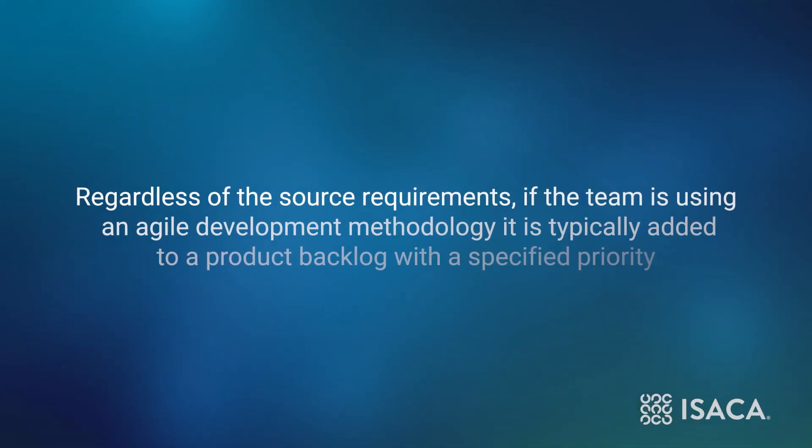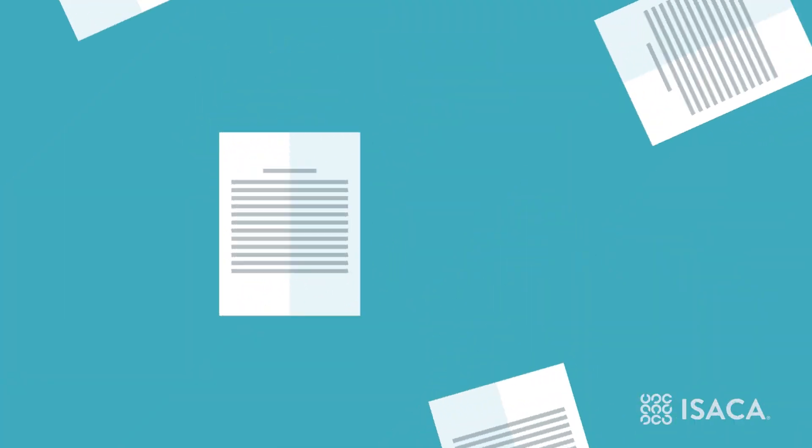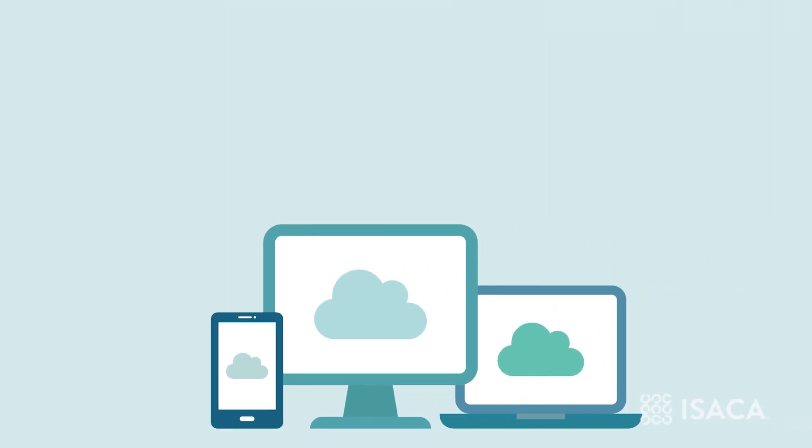Let's start by exploring requirements and how Agile and CMMI are complementary. As with many Agile product development teams, requirements can come from both internal and external sources. Regardless of the source, if the team is using an Agile development methodology, requirements are typically added to a product backlog with a specified priority. Depending on how the Agile team operates, requirements may be transformed into a series of epics and user stories as they are added to the backlog. The product backlog becomes a consolidation point for all requirements that will be delivered by the Agile team.